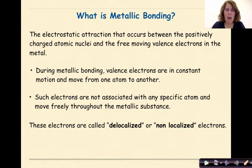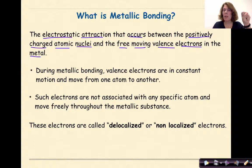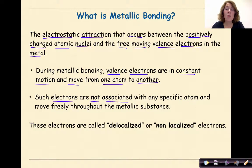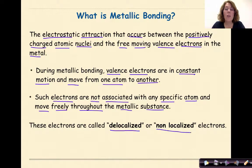So, what is metallic bonding? The electrostatic attraction that occurs between the positively charged atomic nuclei and the free-moving valence electrons in the metal. Translation: you have a nucleus, it's positive, and you have electrons that surround that nucleus. It's this force of attraction and how the electrons behave within a metal that makes it unique. During metallic bonding, valence electrons are in constant motion and move from one atom to another. Such electrons are not associated with any specific atom and move freely throughout the metallic substance. These electrons are called delocalized, because they're not local to a specific nucleus, or non-localized electrons.